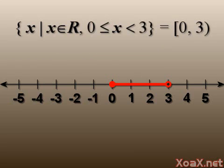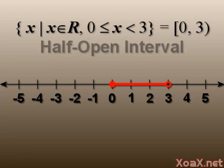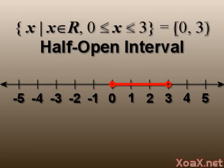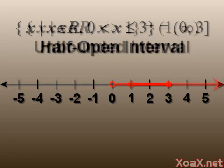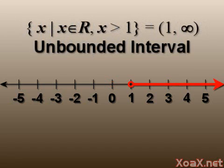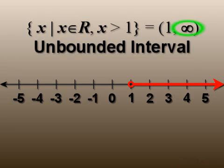Sometimes we want to include one endpoint and exclude the other. In this case the interval is called a half-open interval, regardless of which point is included. In addition, we can have unbounded intervals like this one. This specifies the set of all real numbers greater than one. In interval notation we use an infinity symbol to show that the interval is unbounded above.